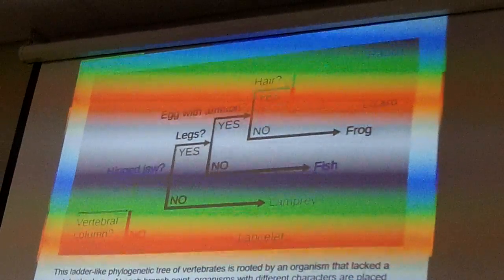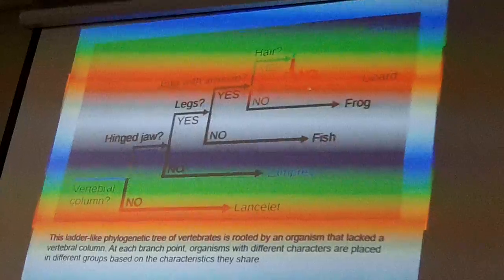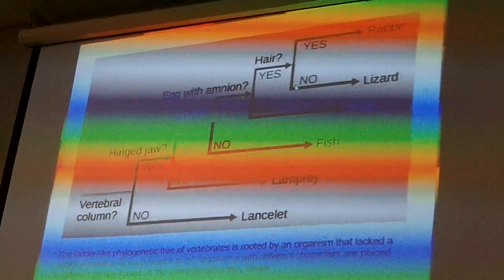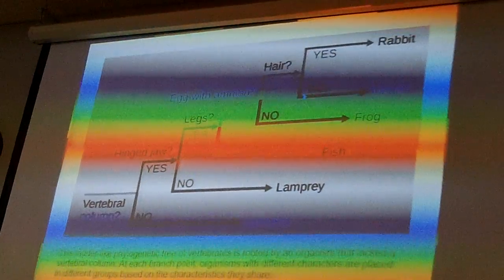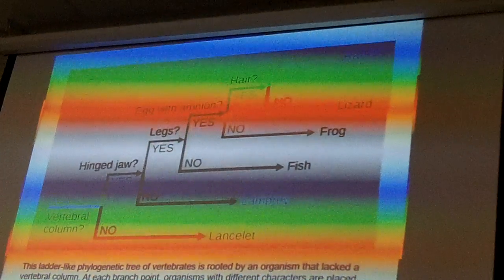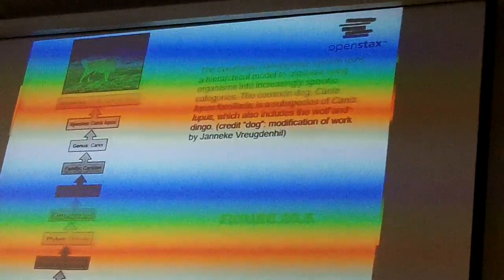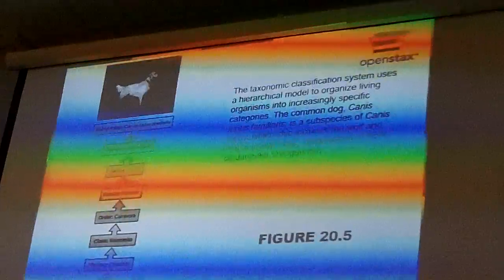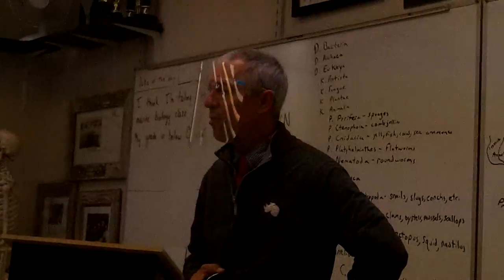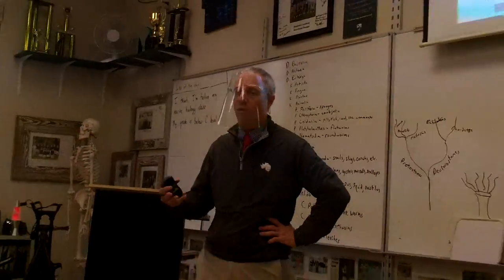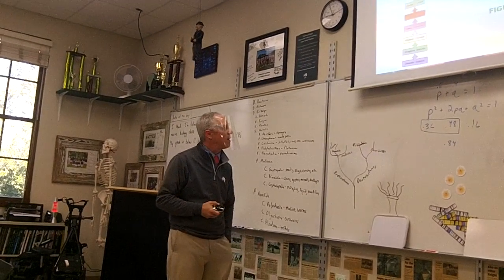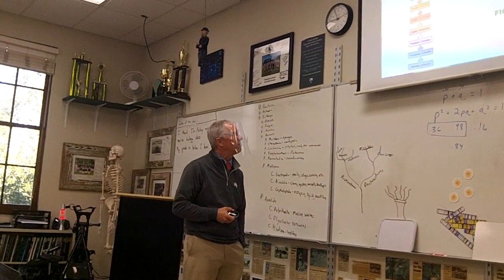Hair evolved in the mammals — rabbits have hair, lizards do not. This is called a cladogram. There are different ways to write it, and we're going to go over cladograms tomorrow and more in the next few days. Cladograms are important — we'll learn how to write and use them.